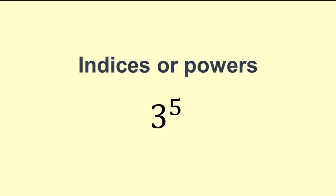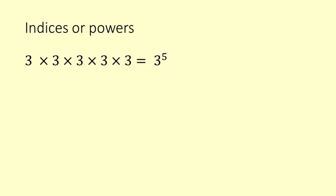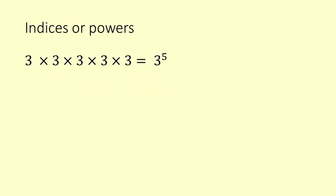Before we start doing engineering notation, I just want to review what indices or powers are. You've got 3 and there's a little 5 up the top, which is called a superscript. The 5 tells you how many times the number 3 is multiplied by itself. So 3 times 3 times 3 times 3 times 3 equals 3 to the power of 5.